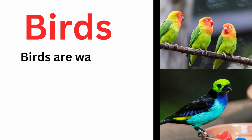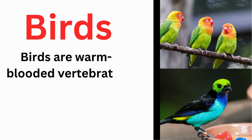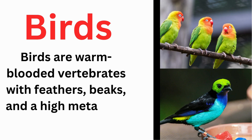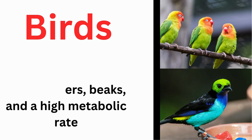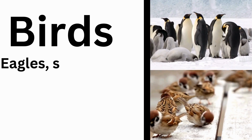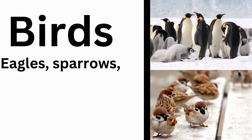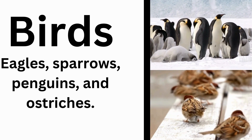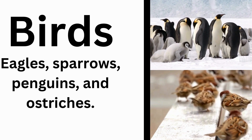Birds are warm-blooded vertebrates with feathers, beaks, and the ability to lay hard-shelled eggs. They also have a high metabolic rate. Examples of birds include eagles, sparrows, penguins, and ostriches.